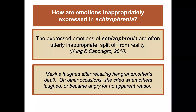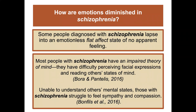The expressed emotions in schizophrenia are often utterly inappropriate, split off from reality. Maxine laughed after recalling her grandmother's death — a totally inappropriate reaction. On other occasions she cried when others laughed or became angry for no apparent reason. Some people with schizophrenia lapse into an emotionless flat affect, a state of no apparent feeling. Most people with schizophrenia also have an impaired theory of mind — difficulty perceiving facial expressions and reading others' states of mind — something also seen in individuals with autism. Unable to understand others' mental states, those with schizophrenia struggle to feel sympathy and compassion.